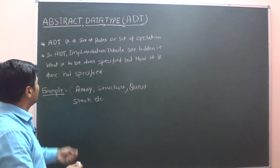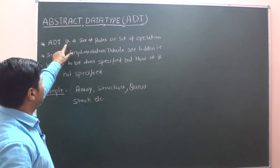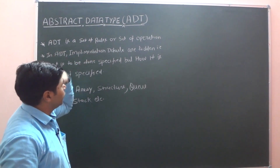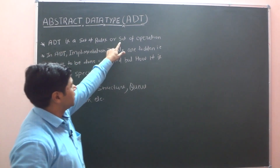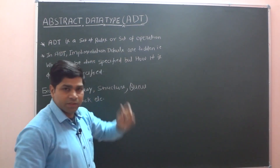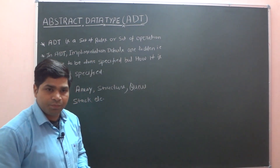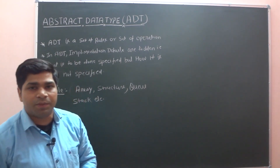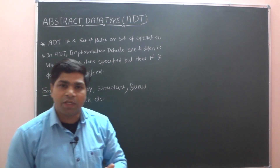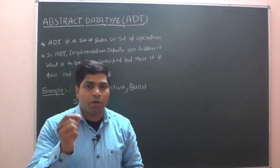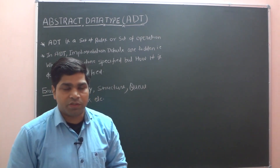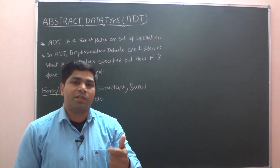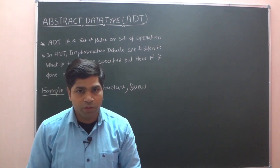Let us look at the definition: ADT is a set of rules, or a set of operations. Meaning, your abstract data type is a set of operations, or we can say, a set of rules.